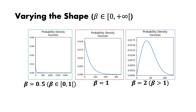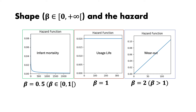The shape parameter is named so because changing it changes the form of the probability density function drastically. According to the shape parameter: if beta is between 0 and 1, you model infant mortality with a decreasing hazard; if beta equals 1, you have a constant hazard function modeling usage life; and if beta is larger than 1 — for example, 2 or 3 — you are in a wear-out period with an increasing hazard.